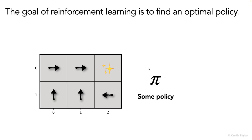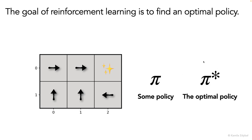By the way, policies are denoted pi, typically in the reinforcement learning literature, where for the optimal policy you will typically see the notation pi star.